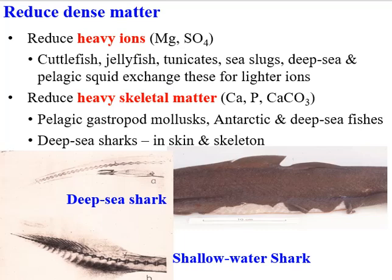Another thing is the skeleton. The skeleton is calcified matter — it's heavy, it's got minerals in it. If you look at the skeleton of deep sea fish, it tends to have less calcium and be less dense. If you look at deep sea sharks, they don't have bones — they're cartilaginous — but even this cartilage is calcified. However, there's a lot less calcium, a lot less calcification in the cartilaginous skeleton of deep sea sharks, of which there are many different species. They also have flabby, less heavy skin.